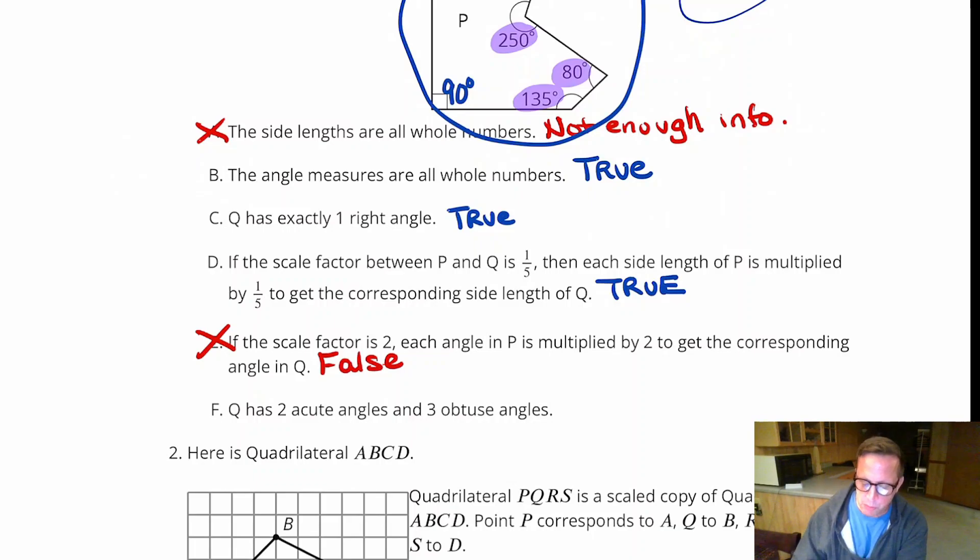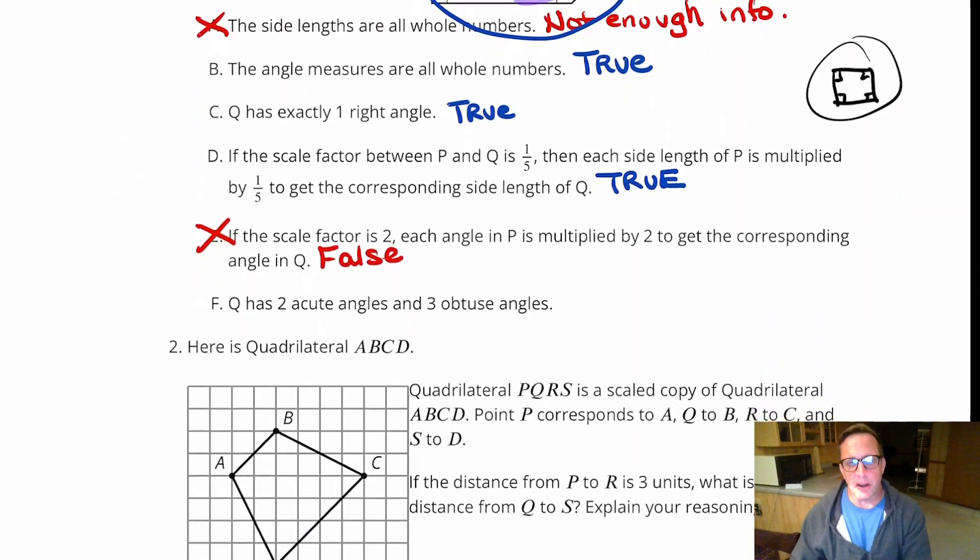Just because you make, I mean, just think of a square. A square has all right angles. And if you double the side lengths of a square, is it now all 180 degree angles? That doesn't make sense. A square has to have right angles. And squares can be all sizes. They can be really, really tiny, like a postage stamp, or they can be really big.